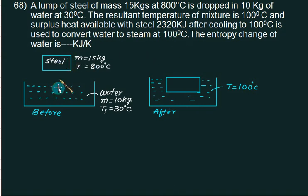If the steel will be dropped inside this one, it is able to raise the temperature of water from 30 to 100. After that also, it has an extra heat equal to 2320. We have a steel block with the extra heat equals to 2320 after cooling to 100. So this block is also equals to 100 degree Celsius. And now is used to convert water to steam at 100 degree Celsius.